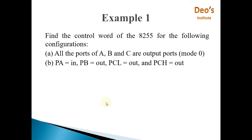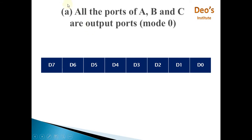Example 1: Find the control word of 8255 for the following configurations. First, all ports A, B, and C are output ports. Second, port A is an input port, port B is an output port, port C lower is an output port, and port C higher is an output port.